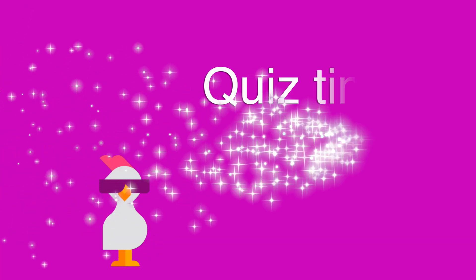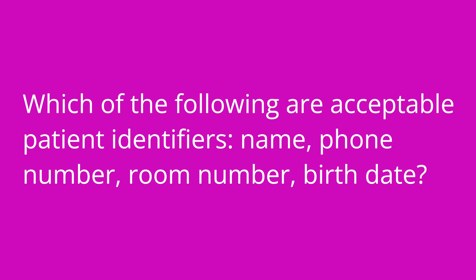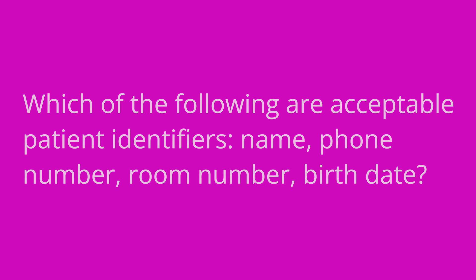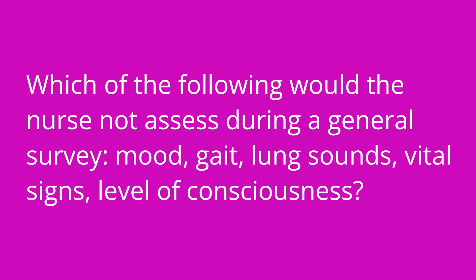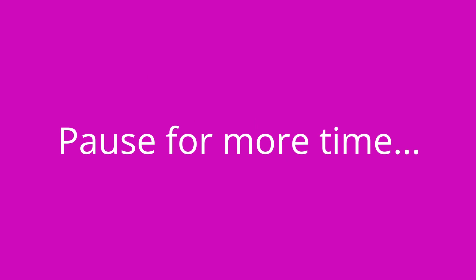I've got some quiz questions for you to test your knowledge of key facts from this video. Which of the following are acceptable as patient identifiers? Name, date of birth, and phone number are all valid patient identifiers. However, a patient's room number is not acceptable as a patient identifier. Which of the following would the nurse not assess during a general survey? The nurse would assess all of those except for lung sounds and vital signs, which are not a component of the general survey.